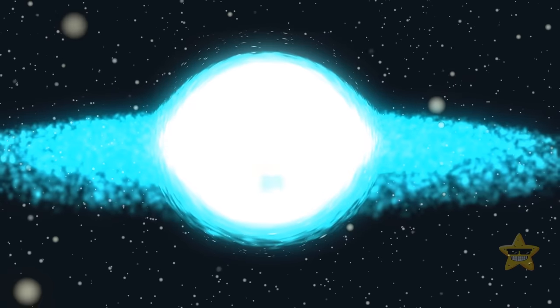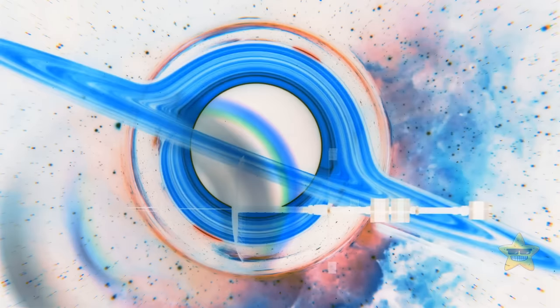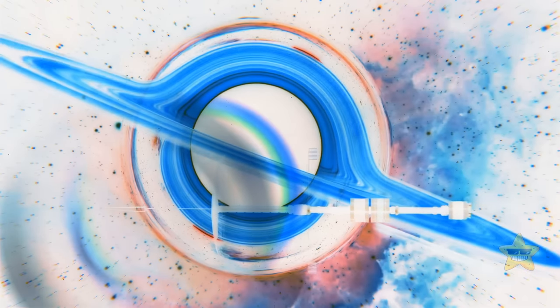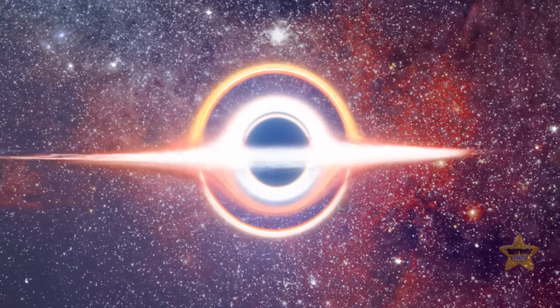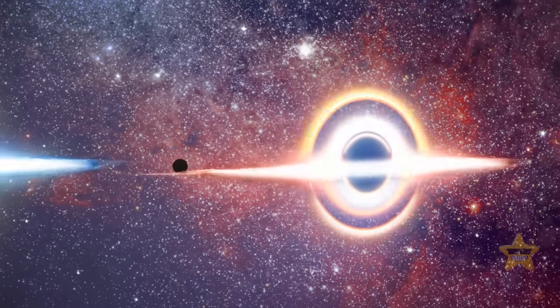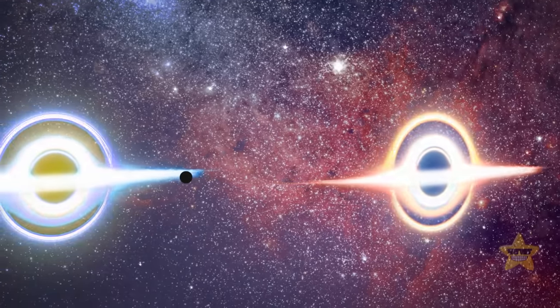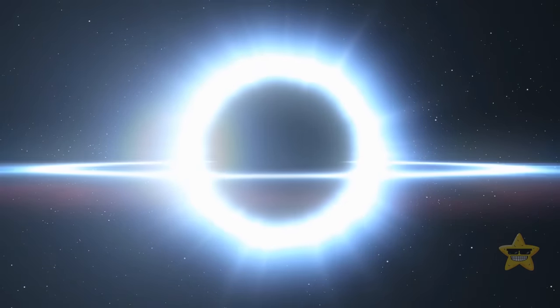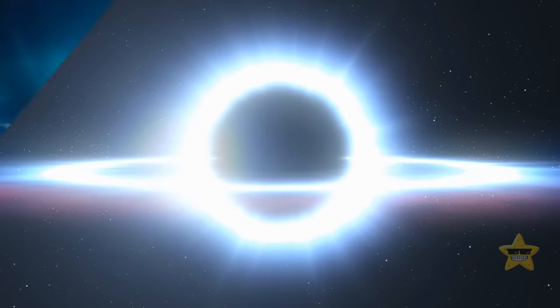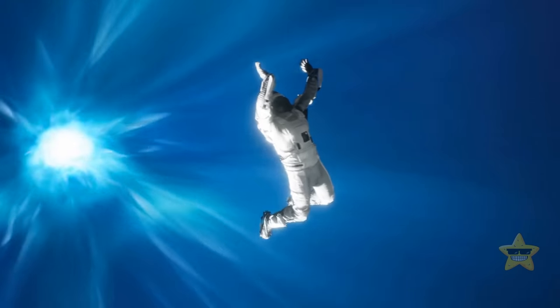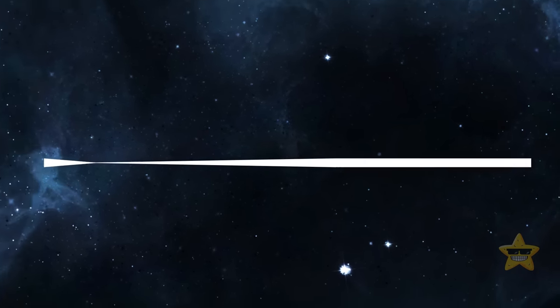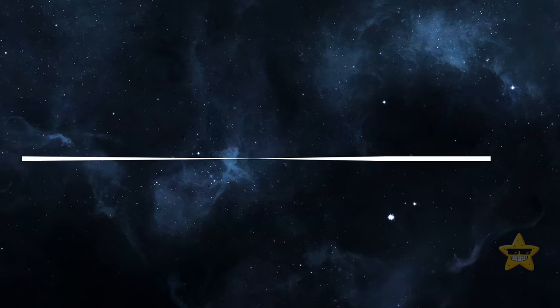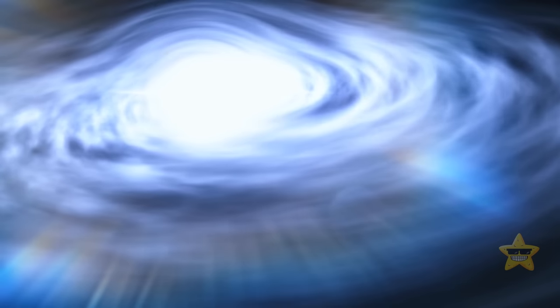So far, white holes are only a theory. You can imagine them as black holes in reverse. Or as a ball that falls to the ground and then bounces up again. In other words, everything that falls in bounces and comes out through the white hole. But how might white holes form? One of the theories speculates that a white hole might be a black hole that has almost collapsed in on itself and then exploded outward again.